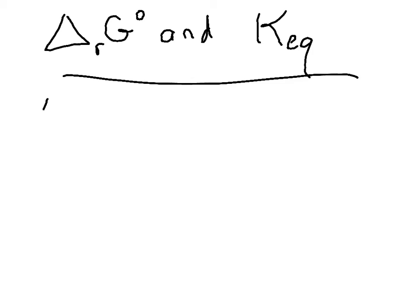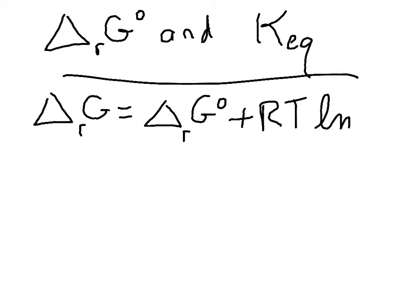We can write that the delta G of a reaction is equal to delta G standard plus RT log of Q, where Q is the reaction quotient.